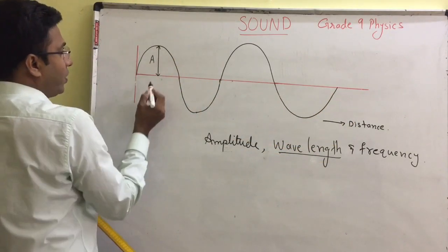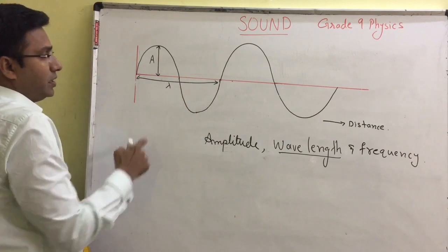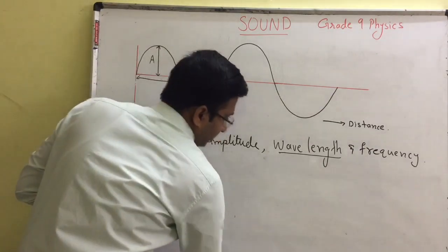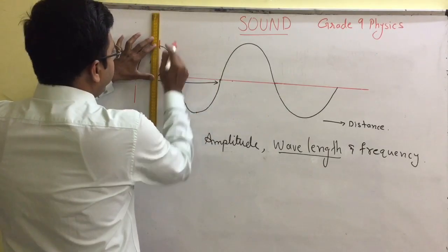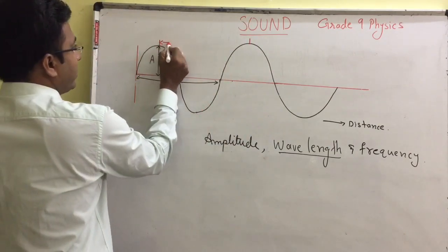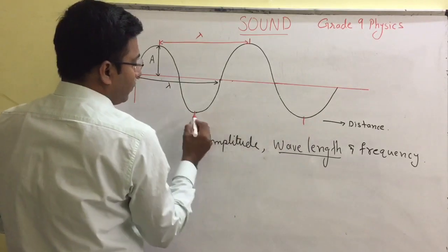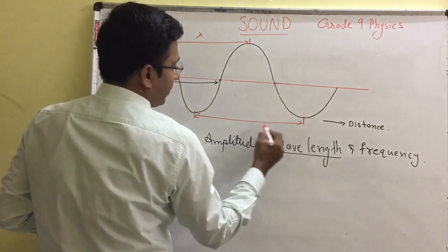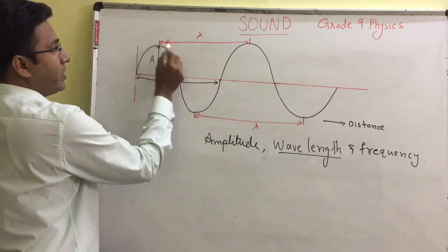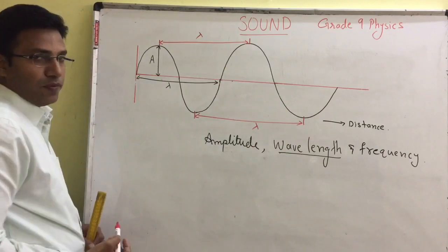Amplitude is represented by the letter A, and wavelength is represented by the Greek letter lambda (λ). Wavelength can also be marked from one crest to another crest, or from one trough to another trough. So wavelength is one complete wave, or the distance from one crest to the next crest, or from one trough to the next trough.